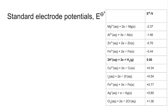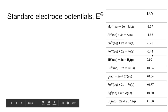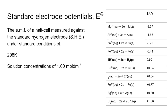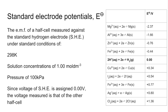Standard electrode potentials use the symbol E⦵. You'll always be given these in a table showing various reduction processes and their voltages. The standard electrode potential is the EMF of a half cell measured against the standard hydrogen electrode (SHE). Standard conditions are 298 K, solution concentrations of one mole per decimetre cubed, gas pressure of 100 kPa, and the standard hydrogen electrode is assigned a voltage of zero volts.